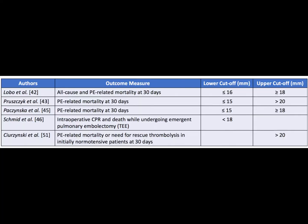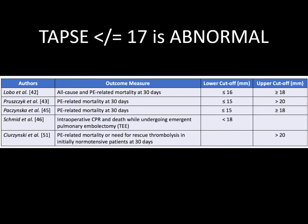Multiple studies have examined TAPSE measurements in relation to PE mortality. There is no definitive cutoff for abnormal, but most studies agree that somewhere around 17 millimeters or less is an abnormally low TAPSE.